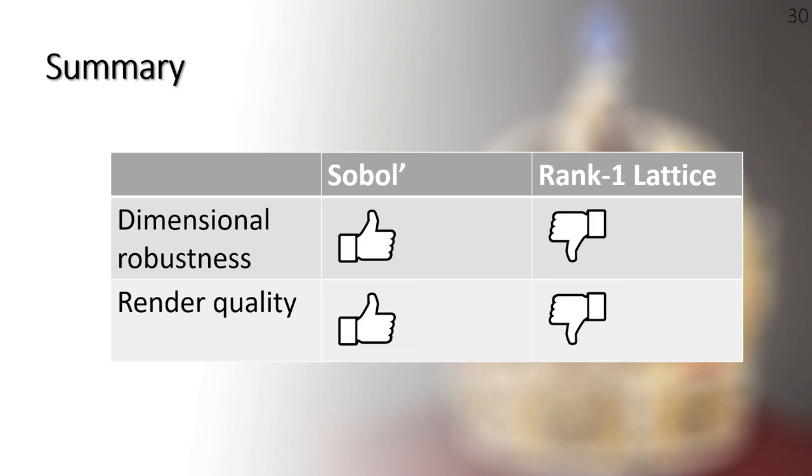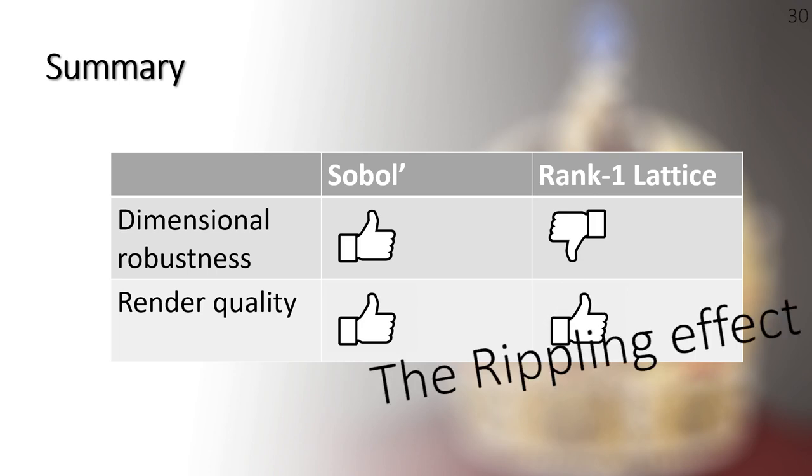The sampling effectiveness of the rank 1 lattice also preserves in bidirectional path tracing. Sobol sampler is recognized as multidimensionally robust. We have achieved similar or even better results with a defective rank 1 lattice, which indicates the impact of the rippling effect between path tracing and sampling sequences. If you are interested to know more, please refer to our paper for more experiments and results including the offline construction cost and the real-time sampling speed.